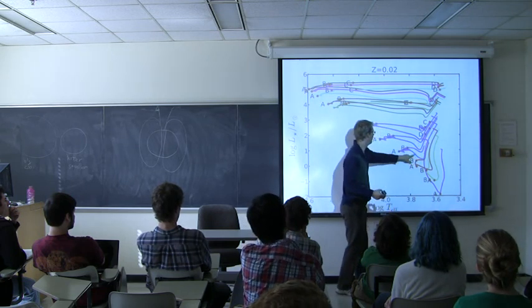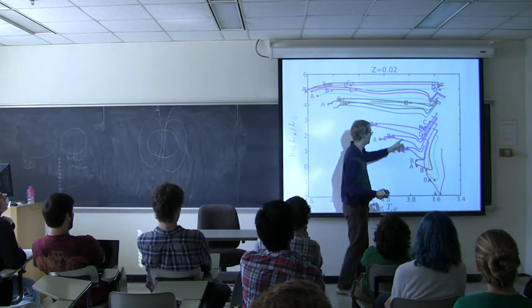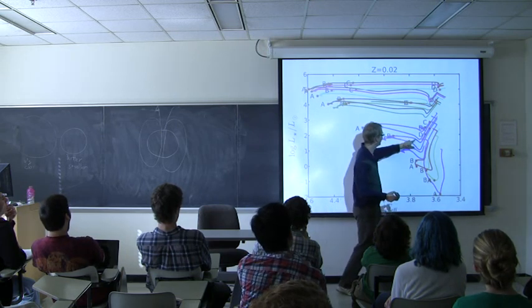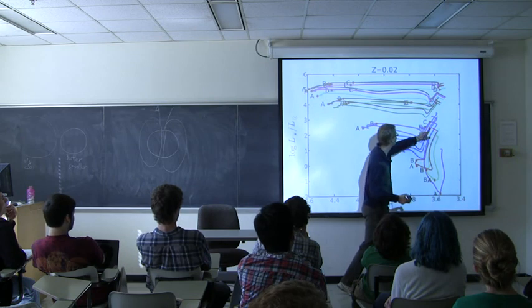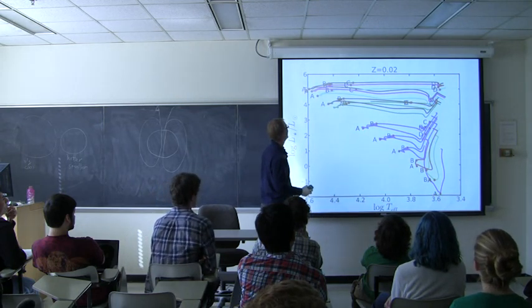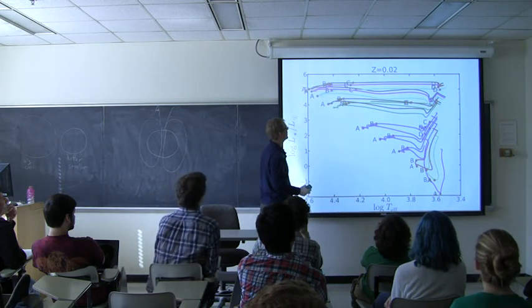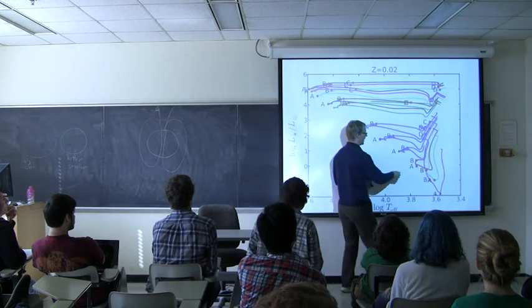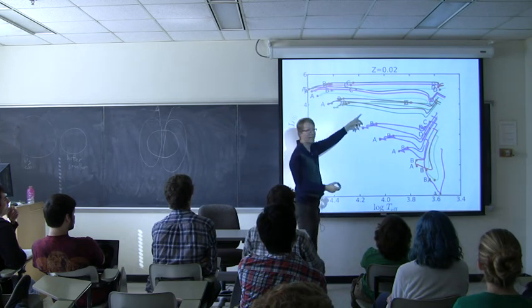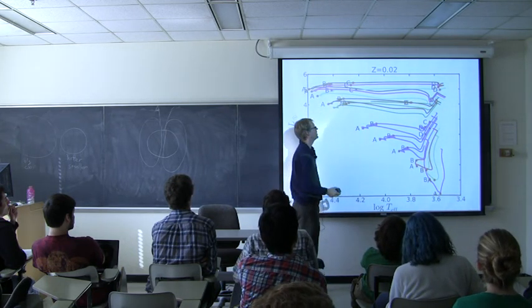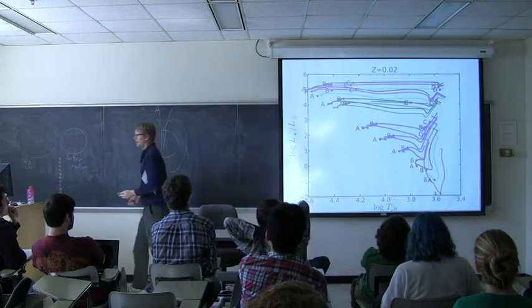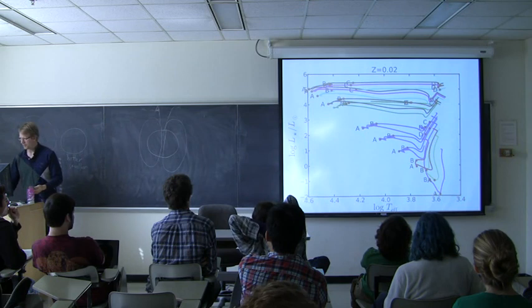And for the high mass guys, the thing that really sticks out to me is the low mass guys have this flat spot here and then they go up, and the high mass guys just go back and forth. They're kind of horizontal. All the evolution is left to right and they don't really change their luminosity very much.